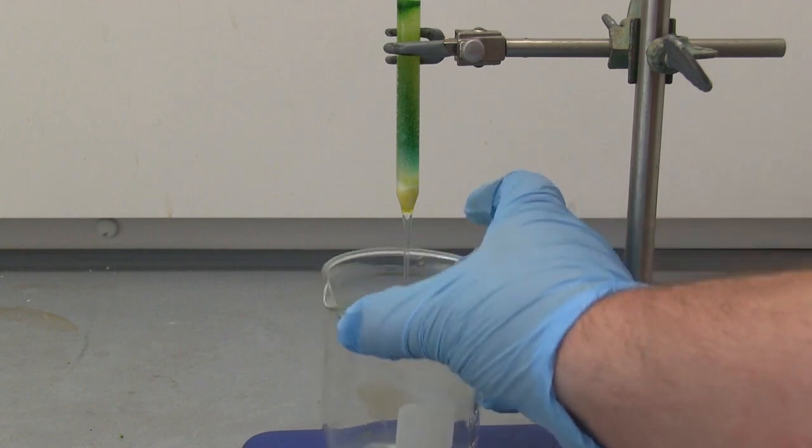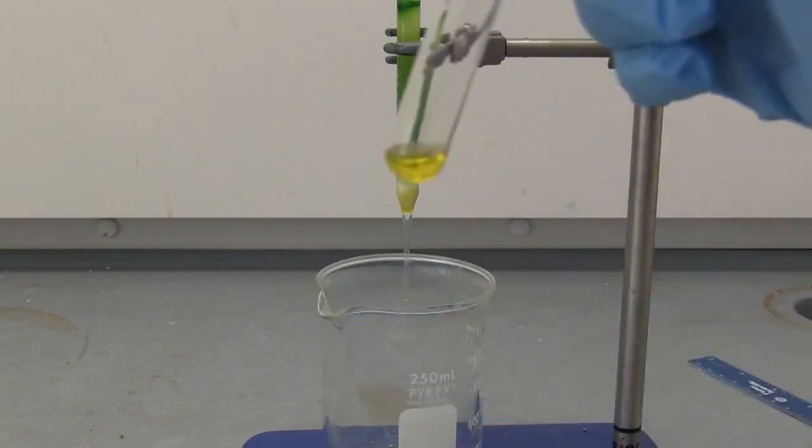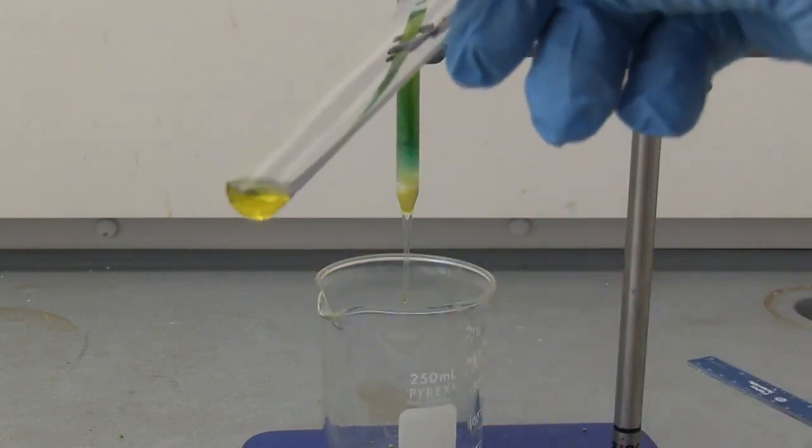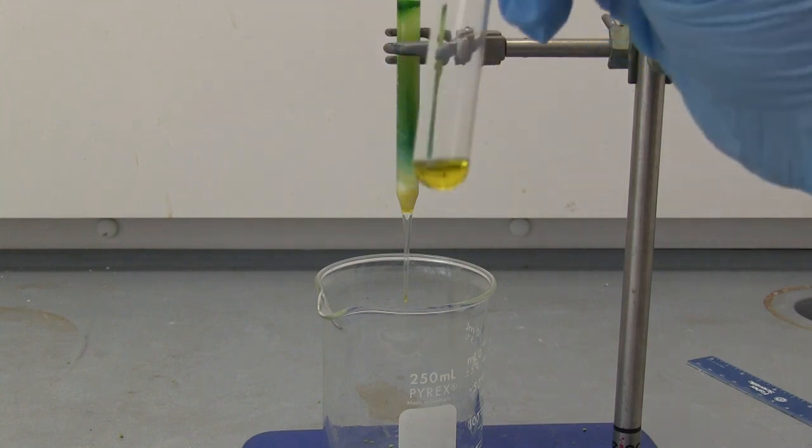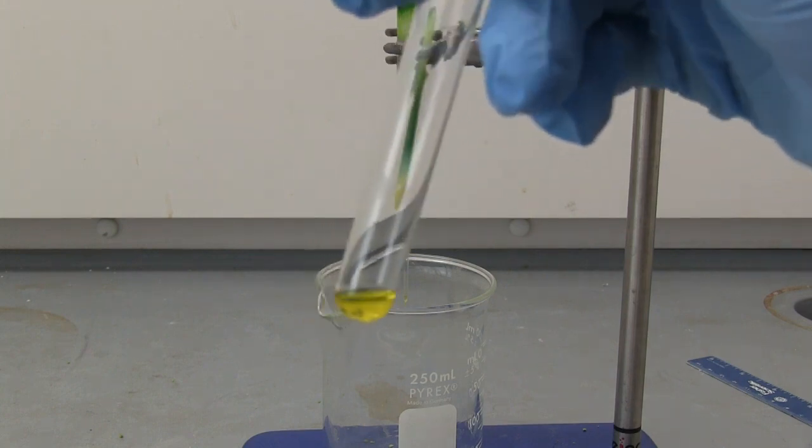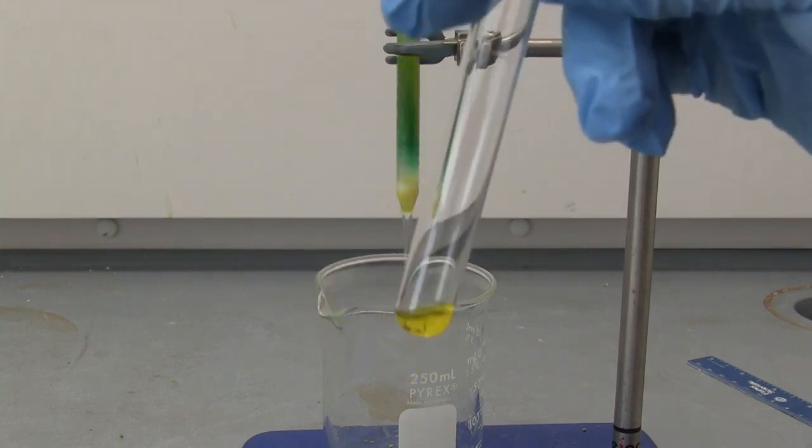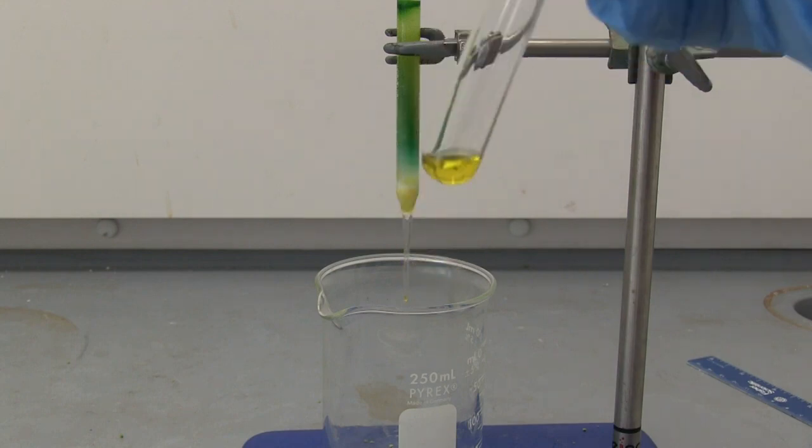I think that's enough to have collected. I don't want to get too close to the green, because it didn't separate very far. That is a really nice yellow. Next we're going to run TLC using 70% hexanes and 30% acetone, and then I will meet you once we have our TLC plate developed.